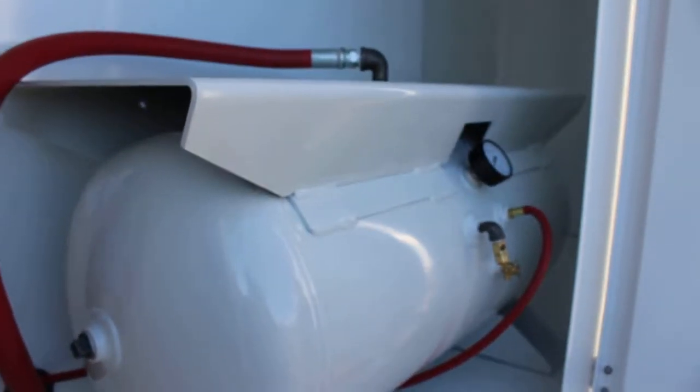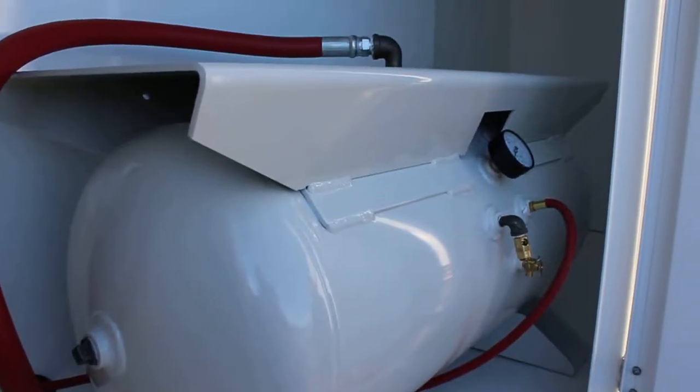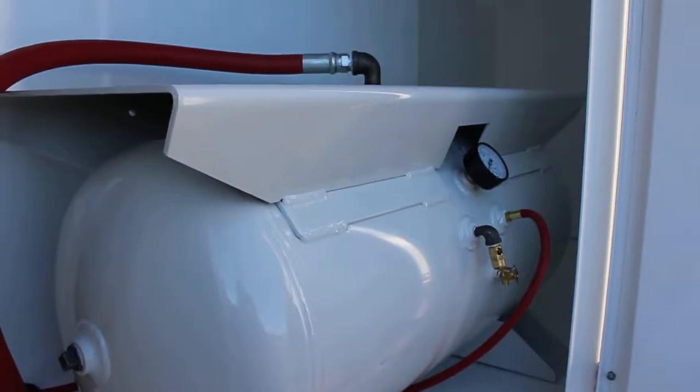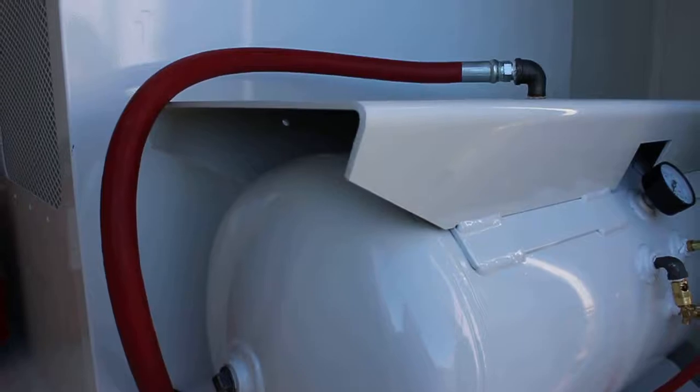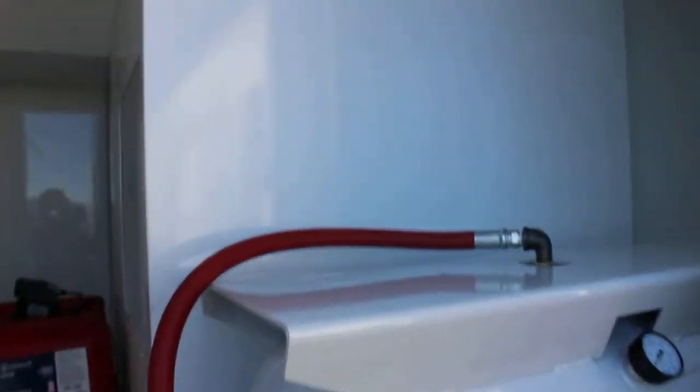Here we have a 30 gallon high pressure tank rated for 300 psi. We have it set up to run around 225 psi. There's also room for more storage above the tank with more shelves along here if you needed to.